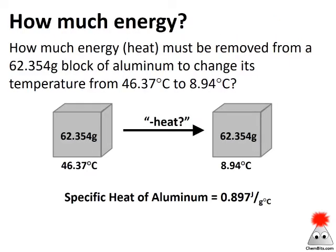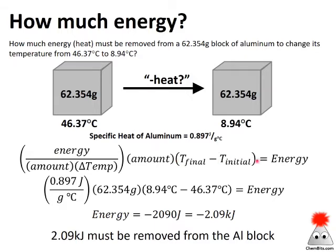Let's start with this problem: how much heat must be removed from a 62 gram block of aluminum to change its temperature from 46 to 9 degrees Celsius? I've got my block of aluminum — 62.354 grams — with an initial and final temperature, and the specific heat of aluminum is 0.897 joules per gram degree Celsius. Plugging in the specific heat, the amount, and the temperature change, I get negative 2,090 joules.